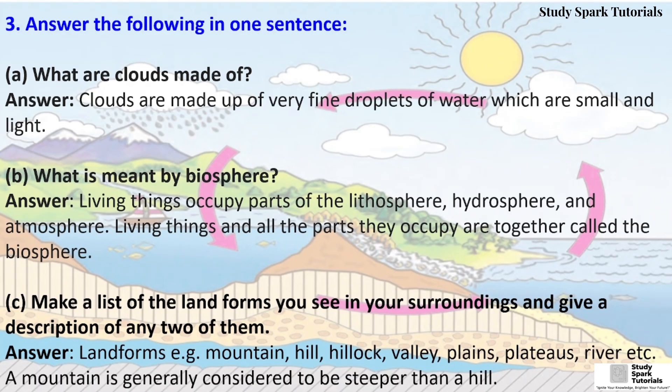Question C: Make a list of the landforms you see in your surroundings and give a description of any two of them. Answer — Landforms examples: mountain, hill, hillock, valley, plains, plateau, river, etc. A mountain is generally considered to be steeper than a hill.